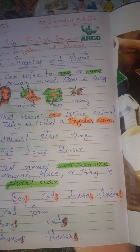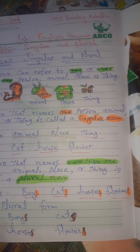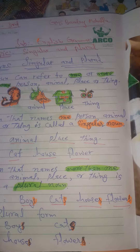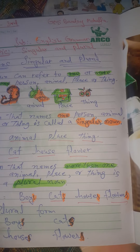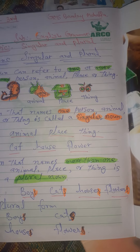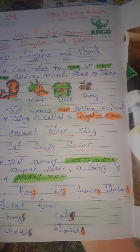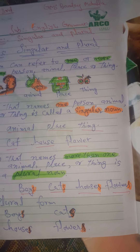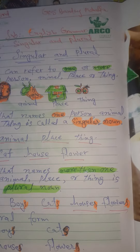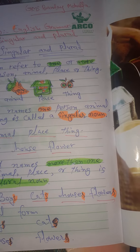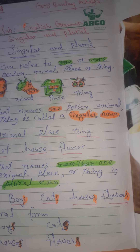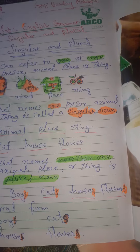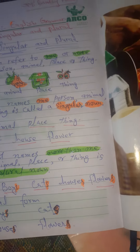Bismillahirrahmanirrahim. Dear students, Assalamu Alaikum Warahmatullahi Wabarakatuhu. Class third, subject English grammar, topic: singular and plural nouns. A noun can refer to one or more than one person, animal, place, or thing.